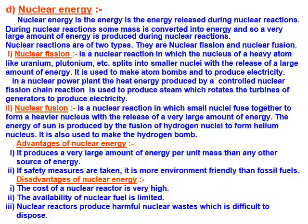Nuclear fission is a nuclear reaction in which the nucleus of a heavy atom like uranium or plutonium splits into smaller nuclei, releasing a large amount of energy. It is used to make atom bombs and to produce electricity in nuclear power plants. In nuclear power plants, the heat energy produced by a controlled nuclear fission chain reaction is used to produce steam, which rotates the turbine of the generator to produce electricity.